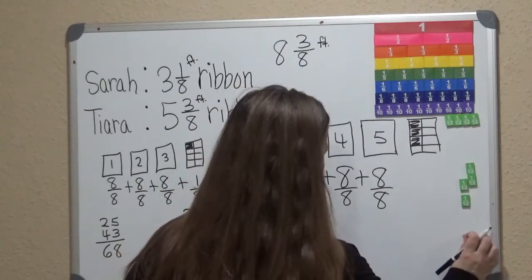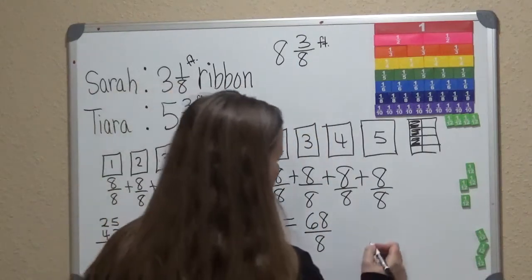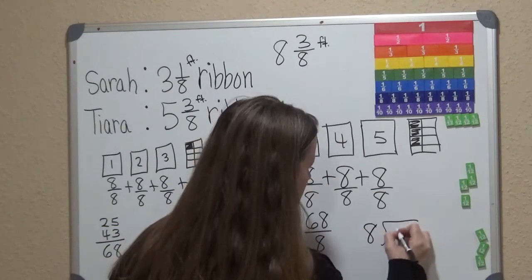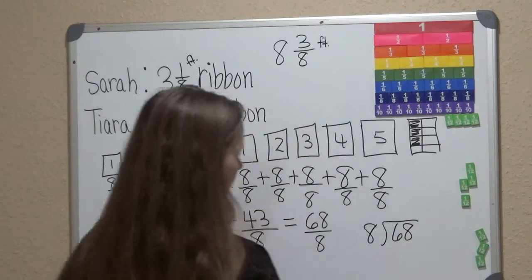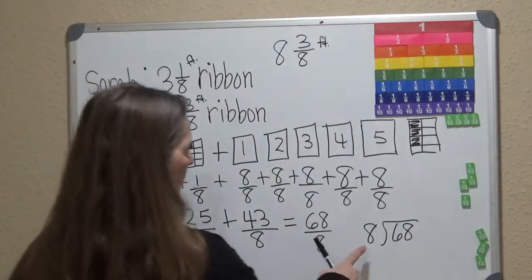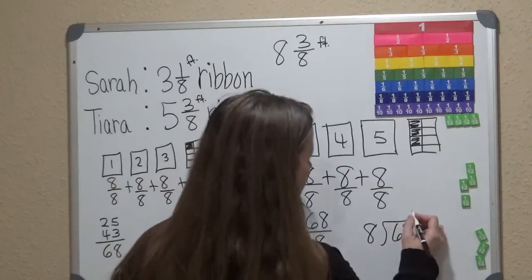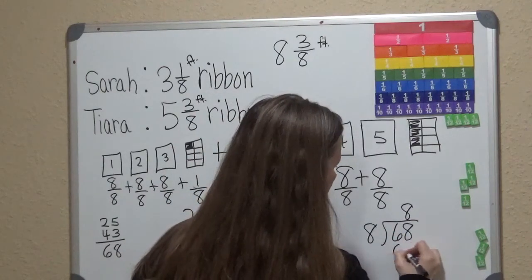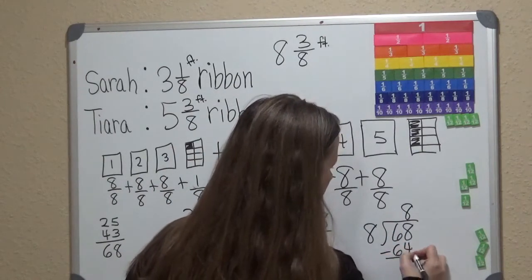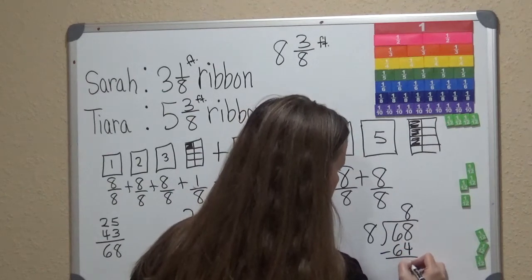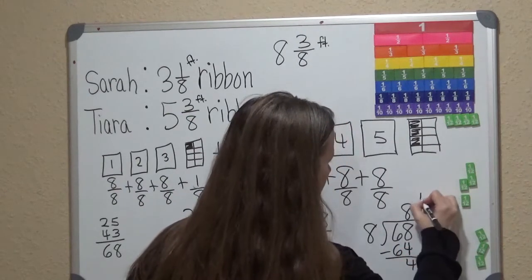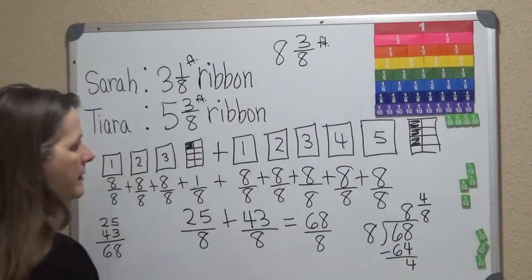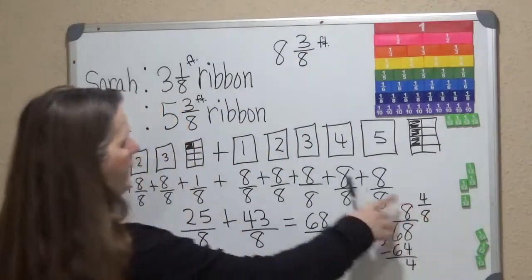Then when we divide, we take 8 and divide it into 68 to see how many sets we can get. We know that 8 times 8 gives us 64, and 68 minus 64 gives us 4. So we know that we have 8 feet and 4 eighths.